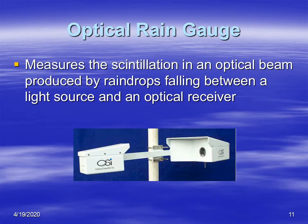Another type of rain gauge that's used is an optical rain gauge. The way this works is that there is a transmitter and a receiver. The transmitter sends a light beam or a beam of radiation towards a receiver. As precipitation falls in between the transmitter and the receiver, the scintillation of the beam determines the type of precipitation and also the intensity of the precipitation.